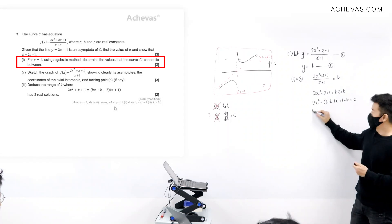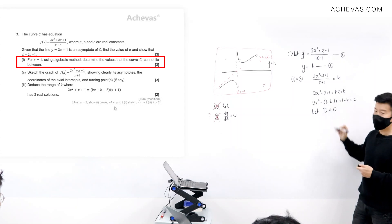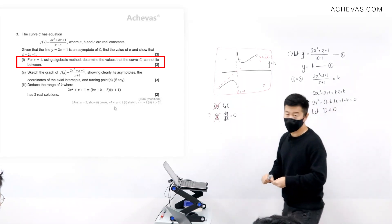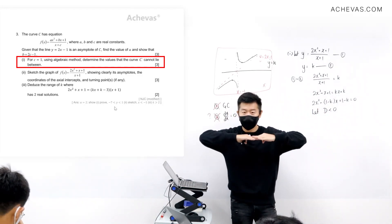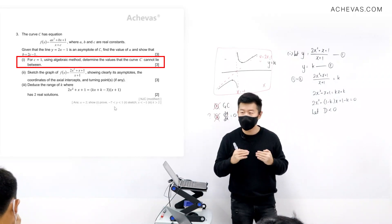So from here, I am purposely going to let the discriminant be less than 0 so that this equation over here has no solution.